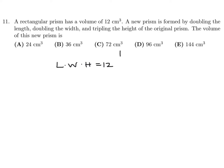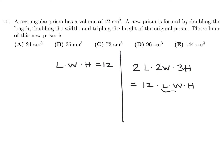Finding the new volume by doubling the length (2l), doubling the width (2w), and tripling the height (3h). When you multiply those factors you get 2 times 2 times 3, which is 12, and then l times w times h we already know is 12, so it becomes 12 times 12, which is 144.